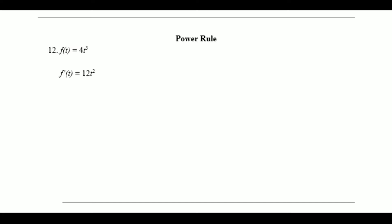Continuing with the derivative series, we're going to be looking at some more basic rules. First off, we have the power rule. In the first example, we have 4 times t to the third power. How would you find the derivative of this?